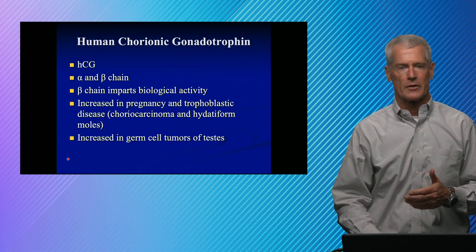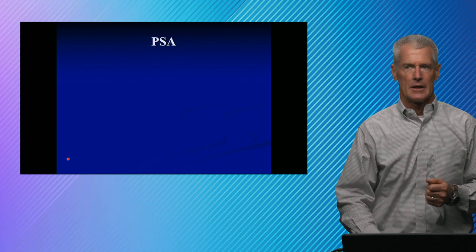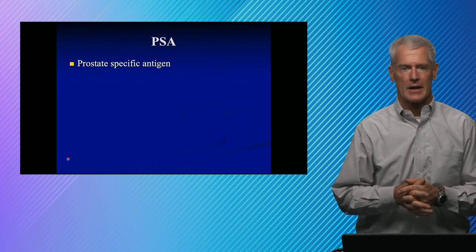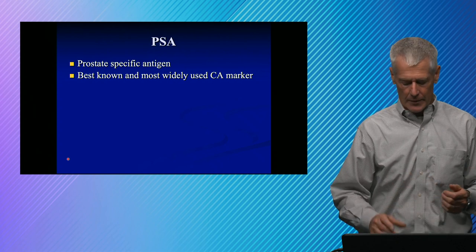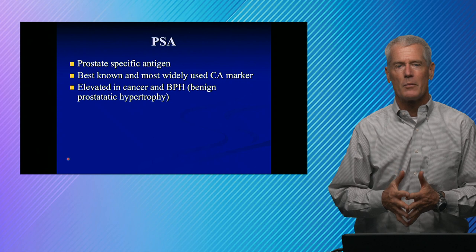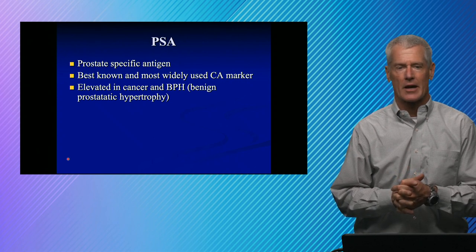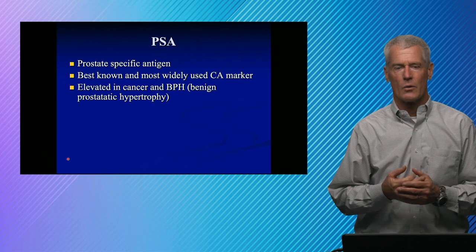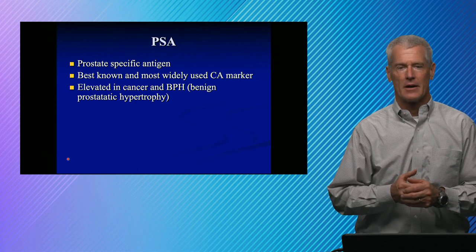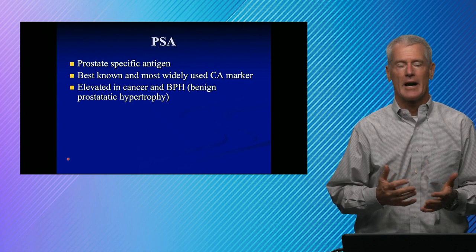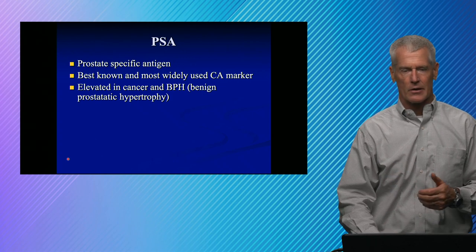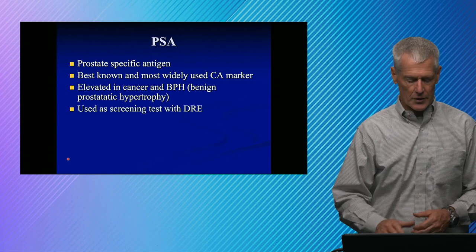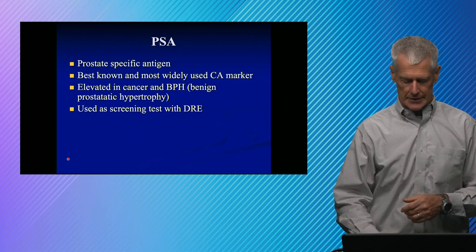HCG also shows up in germ cell tumors of the testes, so HCG does show up in some males. PSA is really our only FDA-approved screening tumor marker. It's probably our best-known tumor marker, but the problem is it's also elevated in BPH — benign prostatic hypertrophy — so there's a lot of controversy about whether PSA is useful as a wide screen, or if we're identifying benign disease. Most males get prostate cancer; most males don't die of it, so that's really a decision advised to be made between the primary care doc and the patient. It's often used with a digital rectal exam as a screening test — that's what the DRE is.